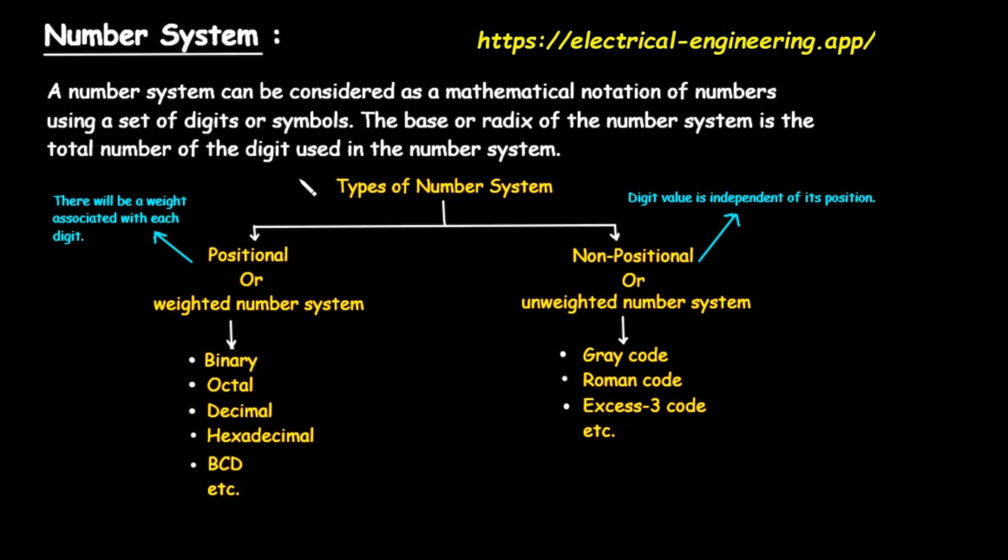Now, let's look at the major categories. Number systems are broadly divided into two main types: positional number systems and non-positional number systems. Let's talk about positional number systems first. These are also known as weighted number systems. The name gives us a big clue. In a positional system, the value of a digit depends not only on the digit itself but also on its position within the number. There is a weight associated with each position.